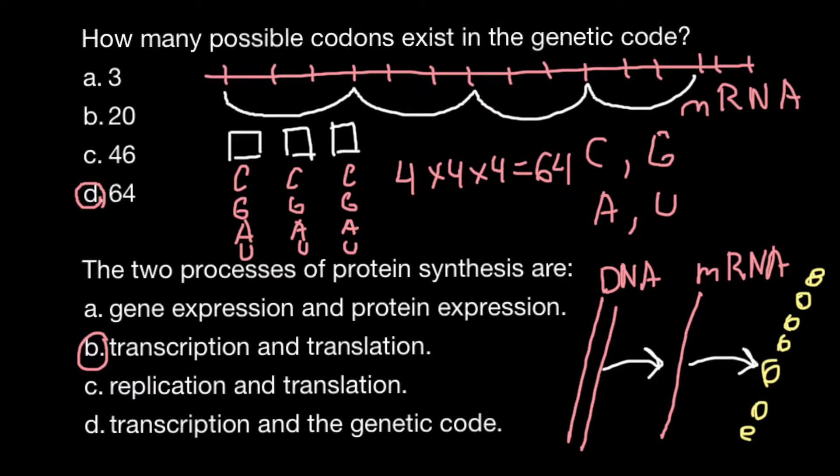But later, this central dogma turned out to be not entirely correct, because there are some viruses that infect the cell. These RNA viruses, using reverse transcriptase, can allow information to go from RNA to DNA. So it's good to know that this central dogma turned out to be not entirely correct, and this picture would be more accurate.